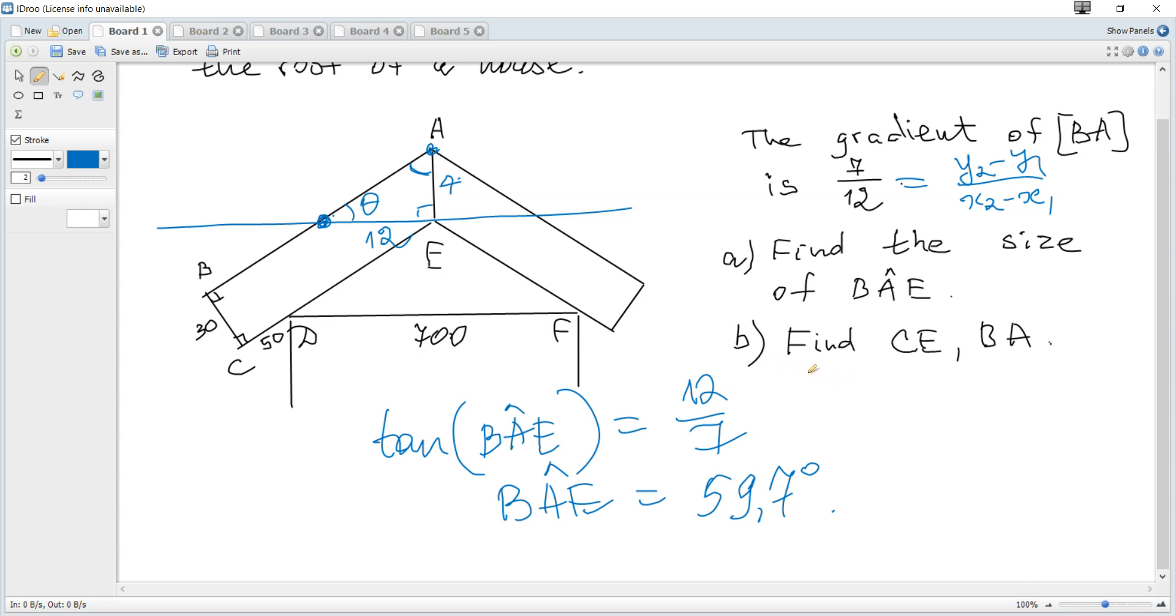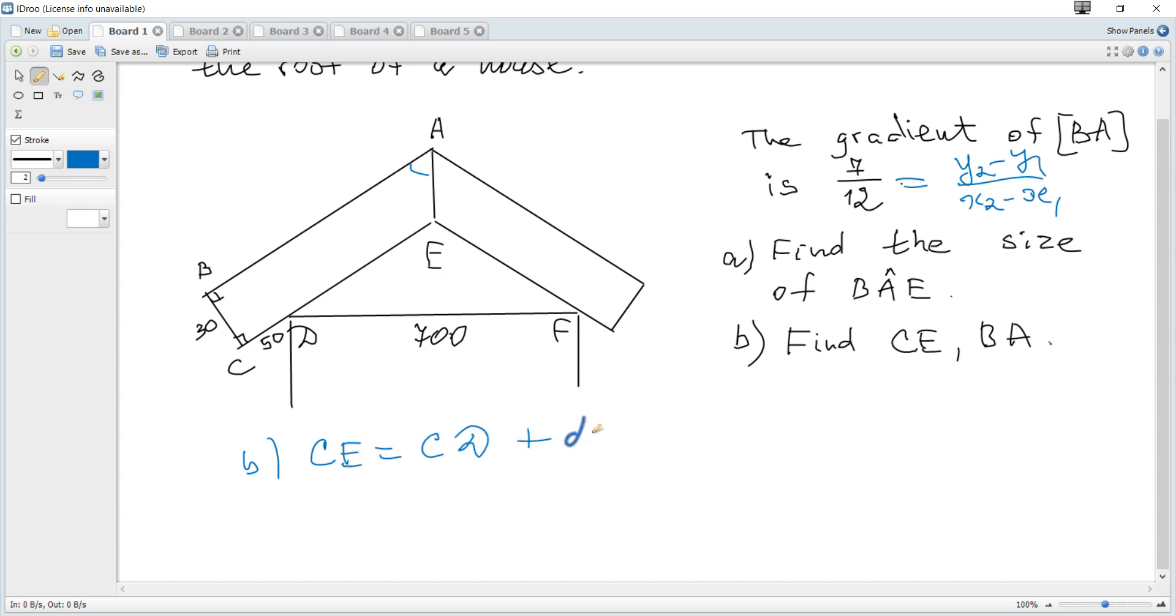The next question B: Find CE and BA. We can see that CE can be found as CD is 50 plus DE.